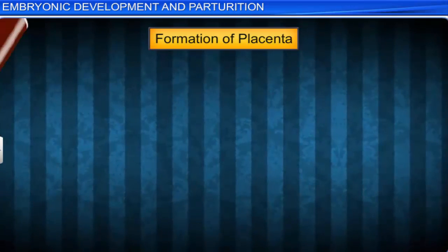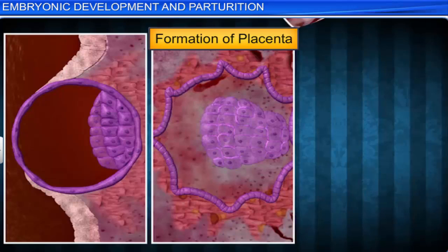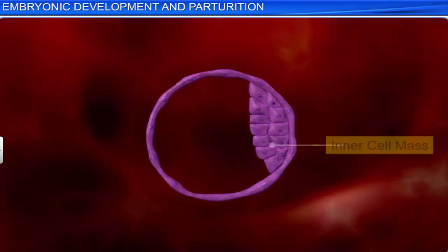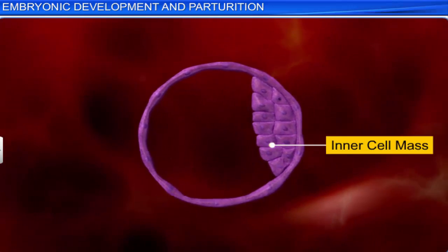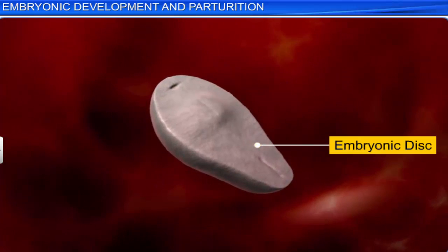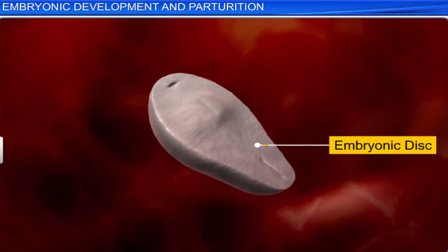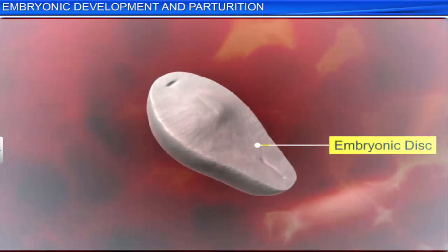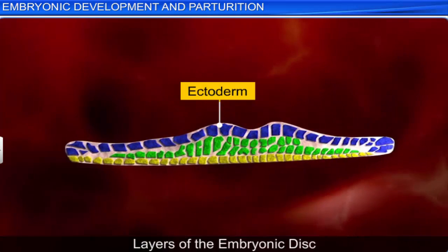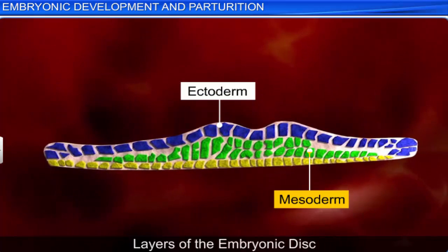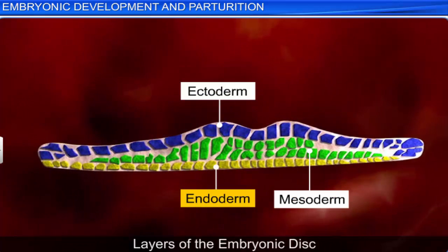Interestingly, when the placenta begins to form, the inner cell mass moves downwards and differentiates to form an embryonic disc consisting of three germ layers: the outer ectoderm, middle mesoderm, and inner endoderm.